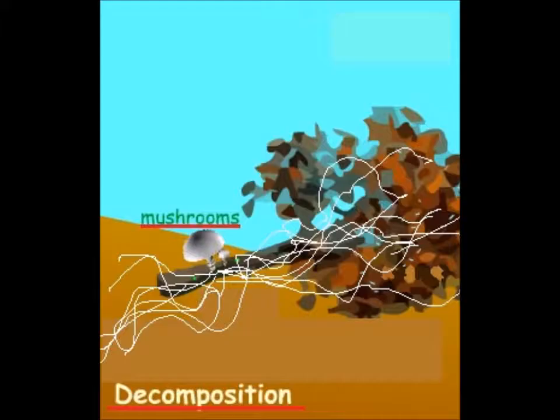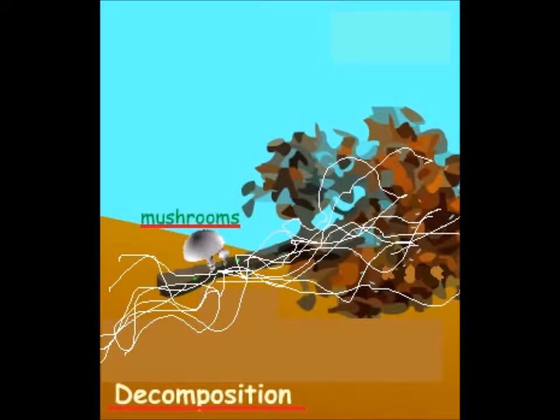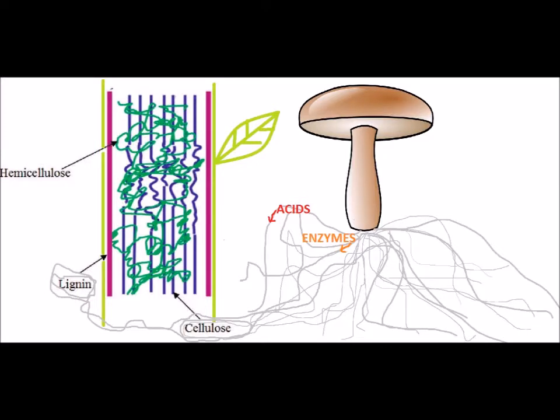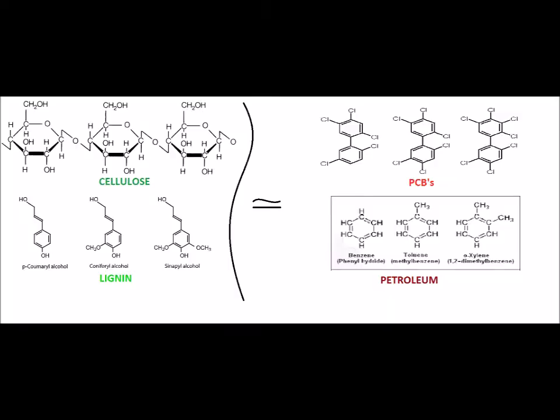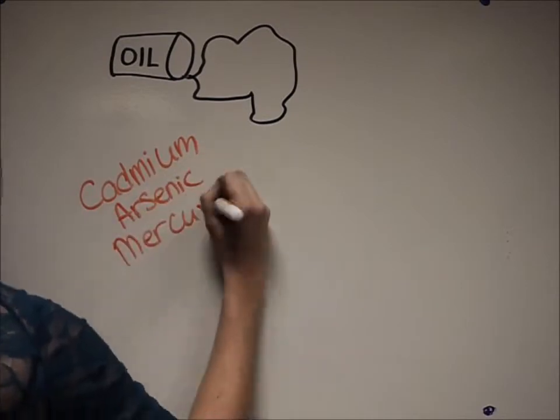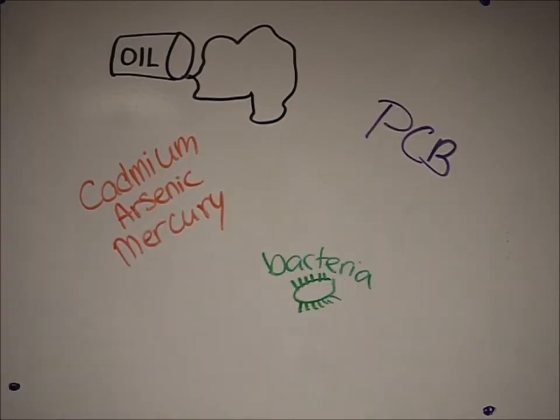One of the primary roles of fungi in the ecosystem is decomposition, which is performed by the mycelium. The mycelium secretes extracellular enzymes and acids that break down lignin and cellulose — the two main building blocks of plant fibre. These are organic compounds composed of long chains of carbon and hydrogen, structurally similar to many organic pollutants. The key to mycoremediation is determining the right fungal species to target a specific pollutant.